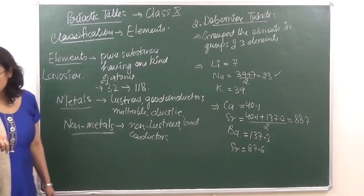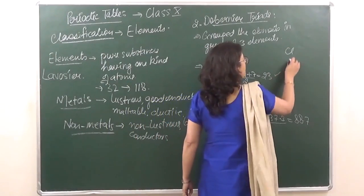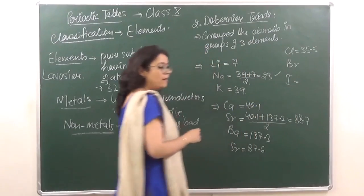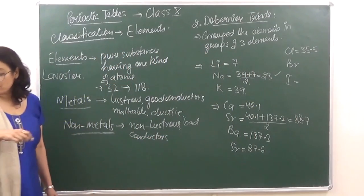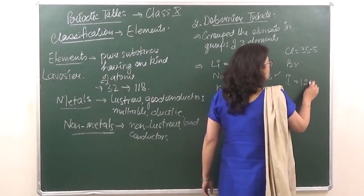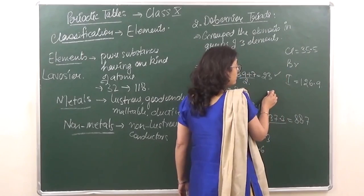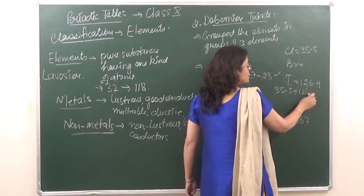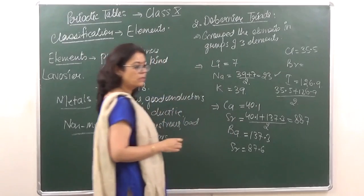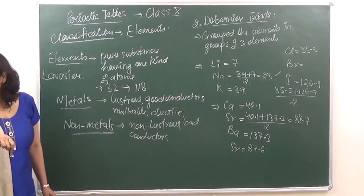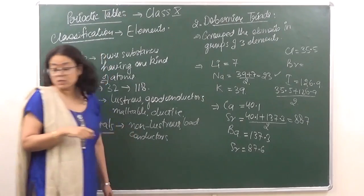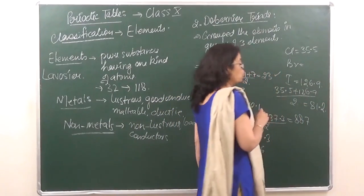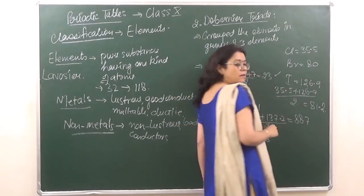There was another triad: chlorine, bromine, and iodine. The atomic mass of chlorine is 35.5 and that of iodine is 126.9. Calculating the average for bromine: (35.5 + 126.9) / 2 = 81.2. The actual atomic mass of bromine is 80, so that was also very close.